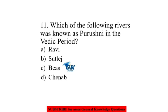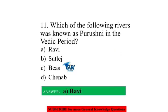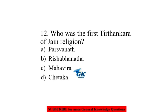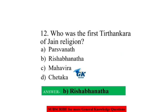Which of the following rivers was known as Purushini in the Vedic period? Ravi. Who was the first Tirthankara of Jain religion? Rishabha Natha.